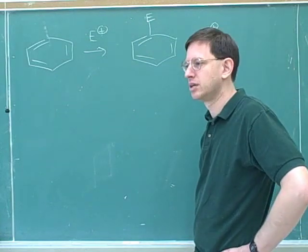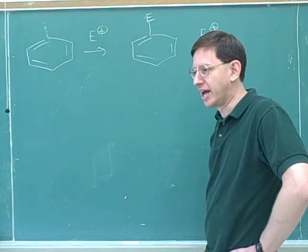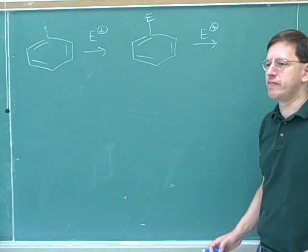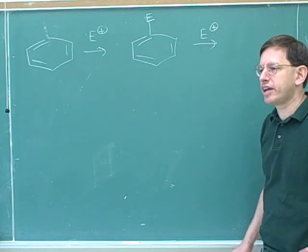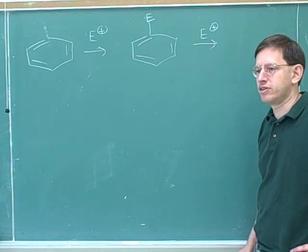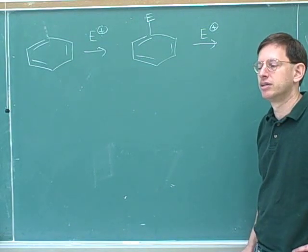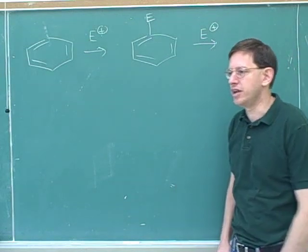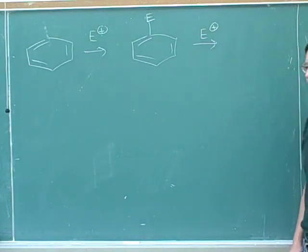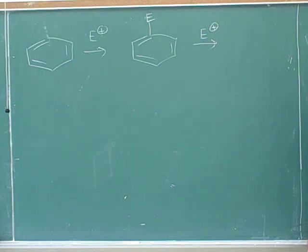Whether a substituent is electron donating or withdrawing determines whether it's an activator or deactivator — the same issue as for Diels-Alder. If you're electron donating, that makes you an activator. Electron donating substituents are activators because through resonance they can push their electrons down and put a negative charge somewhere on the benzene ring to activate it.